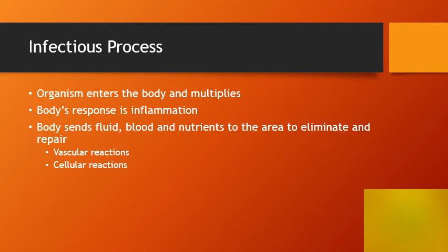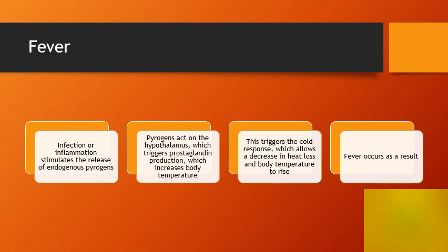Your book describes in table 37.1 on page 1335 all the different types of white blood cells and their functions. It is a great chart that you should be familiar with.